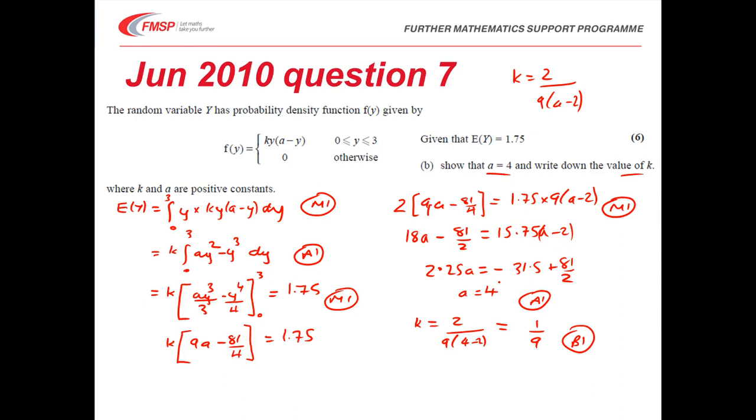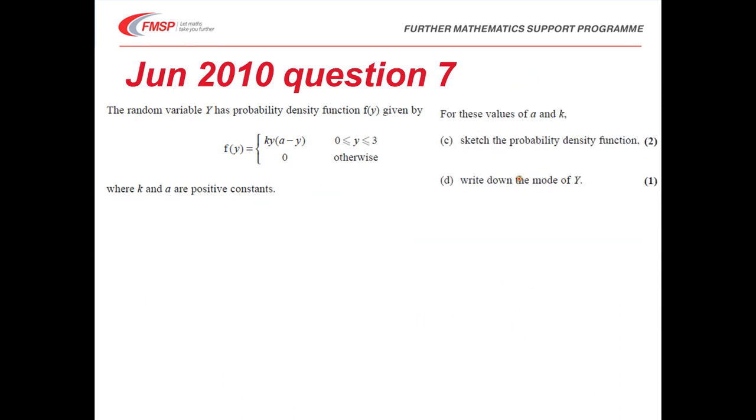The question continues. We're then asked to sketch the PDF. We know that a is 4, so that helps. For part c, we're going to have a graph that goes from 0 to 4. Now your support only goes up to 3, so I know I'm going to have a parabola that is symmetric on the interval to 2.